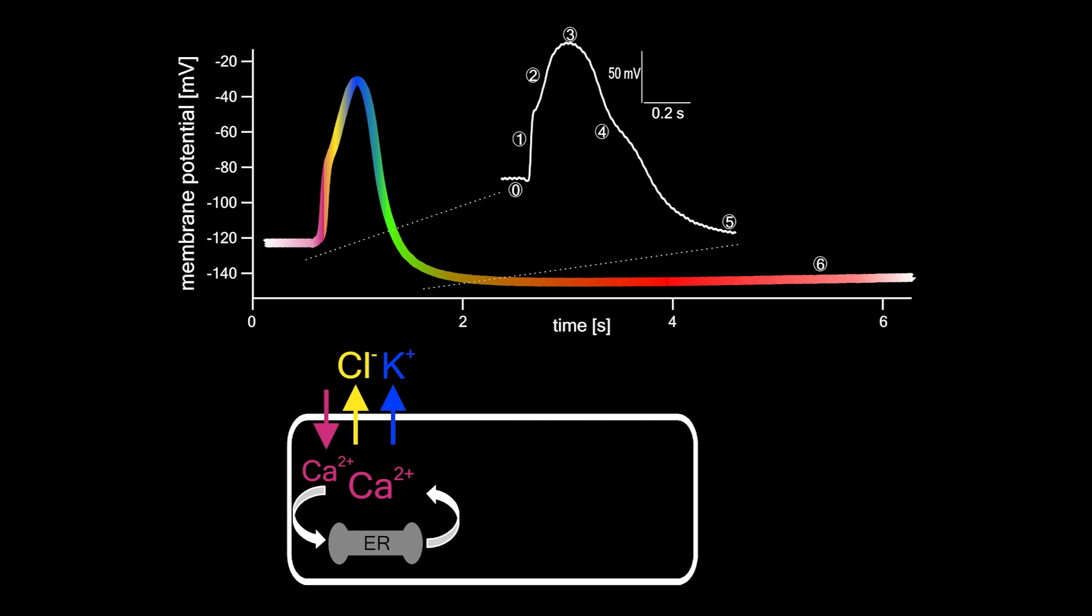In the phase following, depolarization-activated potassium channels open and release potassium. This counteracts anion channel action at a level of the depolarization peak.